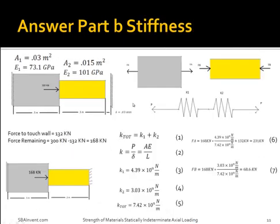To solve for part B using stiffness, take into consideration the force required to touch the wall, which was 132 kN. Subtract that from 300 kN to get 168 kN, which sets up a new problem where both sections see the same deflection — so the springs are in series, giving k total equals k1 plus k2. Solve for FA by multiplying 168 kN times k1 over k total plus the 132 kN, giving 231 kN. Solve for FB by taking 168 kN times k2 divided by k total, giving 68.6 kN — the same answers found using the superposition method.